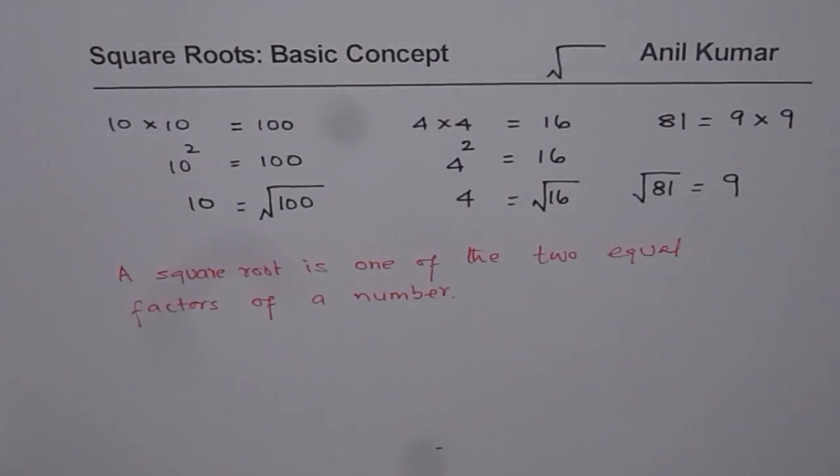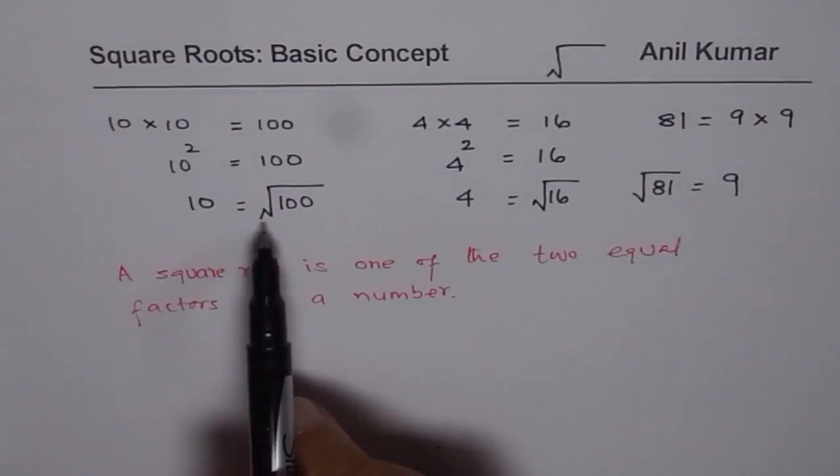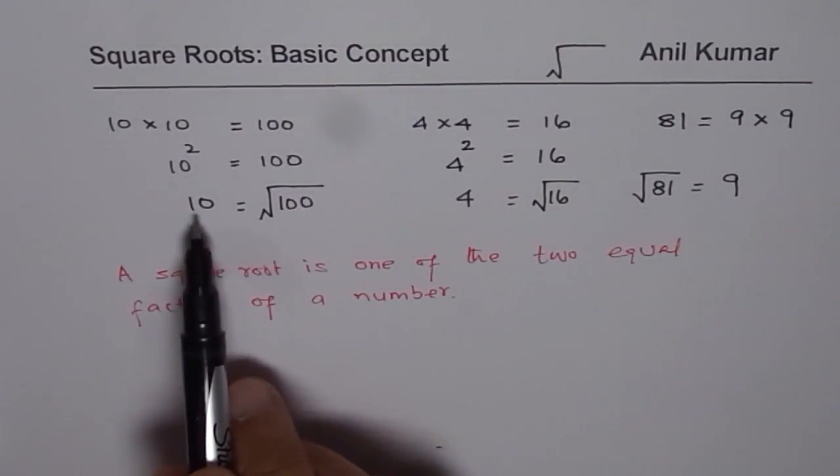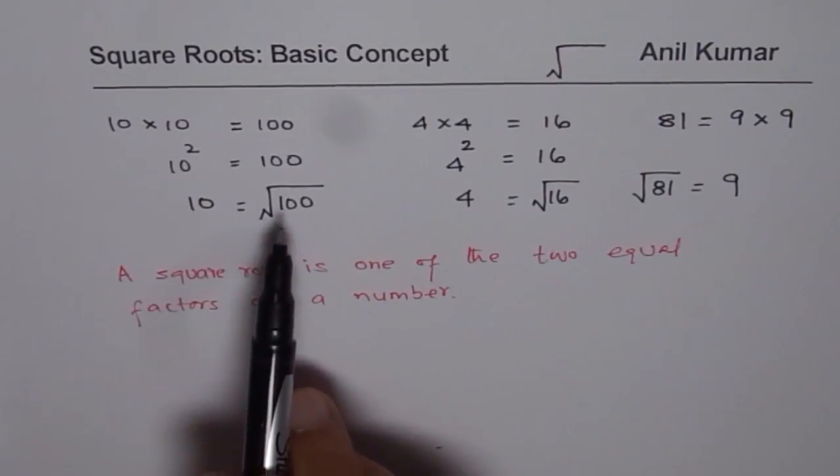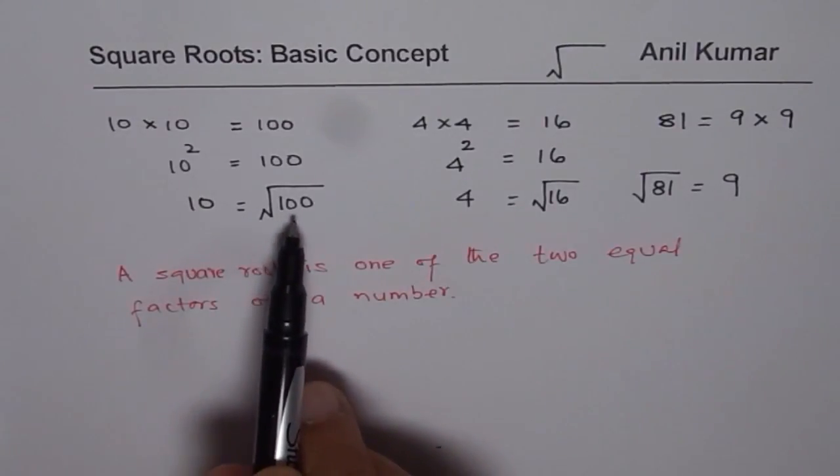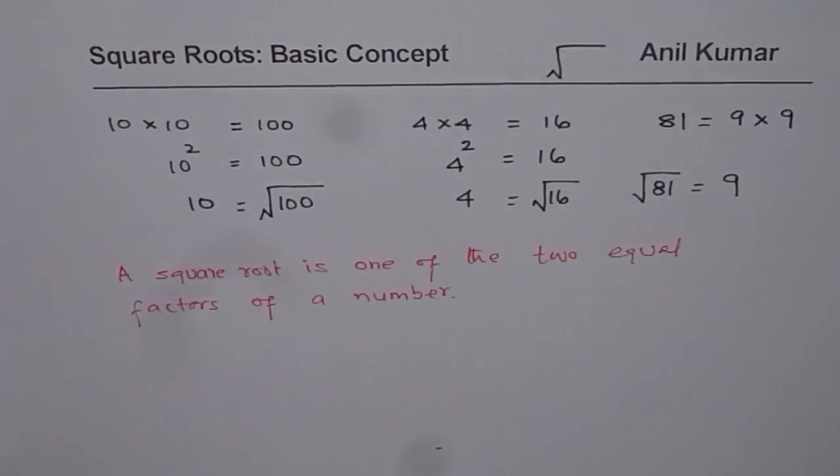The examples which we are taking up now, they are also called perfect squares because 100 has 10 as an equal factor. It may not be always true for all the numbers. So these numbers which we are taking up in this particular example are the perfect squares.